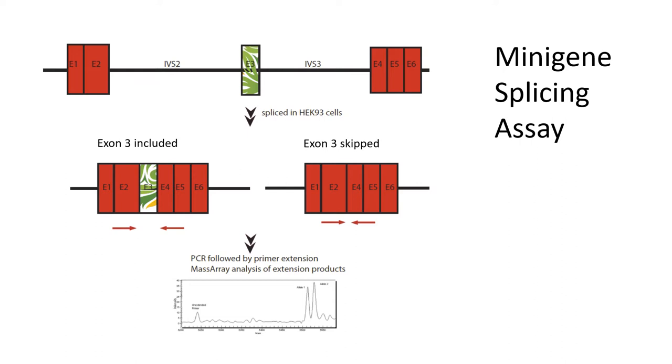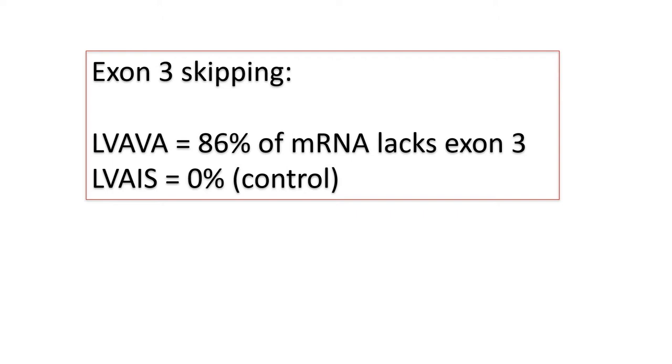They did this using a minigene splicing assay, which is a well-established assay in the splicing world. The minigene is basically the opsin cDNA with the introns 2 and 3 inserted as well as different variants of exon 3. The minigene is transfected into HEK 293 cells and then the splicing isoforms that are generated are examined by sequencing, and they found two major isoforms. One is the normal isoform in which exon 3 is included, and the other one is one in which exon 3 was skipped. We have gone on to develop a quantitative version of this assay using the Agena MassARRAY genotyping platform that uses a primer extension assay and analyzes the products using MALDI-TOF mass spectrometry. Using this assay we established that 86% of the messenger RNA generated from the LVAVA haplotype lacks exon 3 compared to 0% of the messenger RNA from the control LVAIS photopigment gene lacking exon 3.